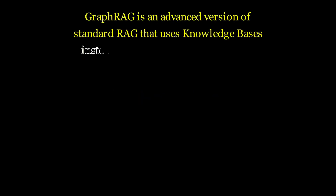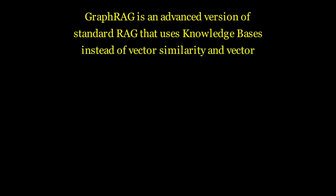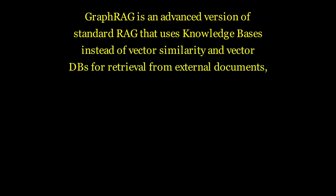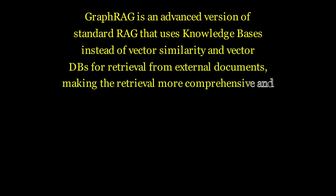What is GraphRAG? GraphRAG is an advanced version of standard RAG that uses knowledge graphs instead of vector similarity and vector databases for retrieval from external documents, making the retrieval more comprehensive. It involves graph analytics and knowledge graph creation from external text for better retrieval.